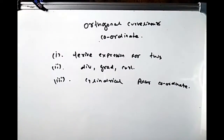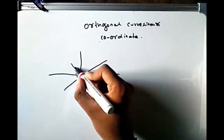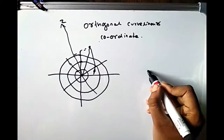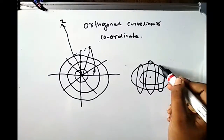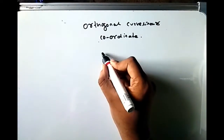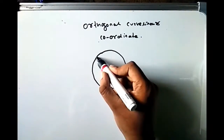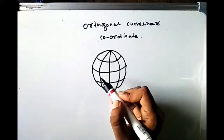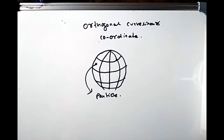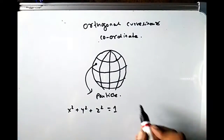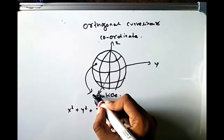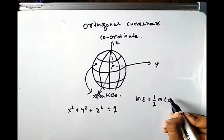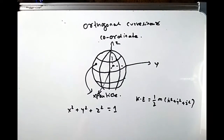Sometimes it is advantageous to choose another coordinate system. For example, consider a problem: find the dynamics of a particle moving on the surface of a sphere. The equation of the sphere is x² + y² + z² = 1. If we simply calculate the kinetic energy as T = ½m(ẋ² + ẏ² + ż²), we have to deal with three variables x, y, and z.